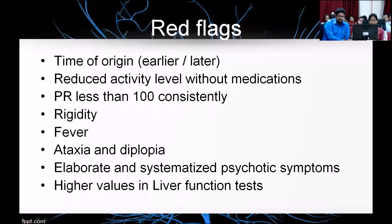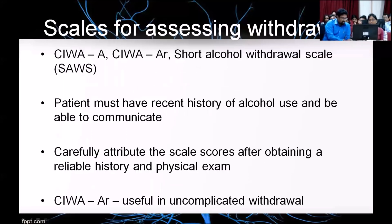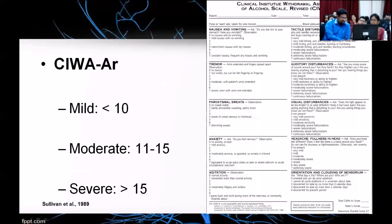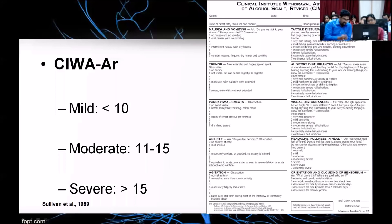Some things to be wary of: if delirium is occurring very quickly after stopping alcohol or very late — say 6 to 7 days after use — look at other causes. Before medicating somebody, hypoactive delirium presenting with a pulse rate less than 100 paired with high blood pressure requires serious ruling out of head injury. Also rule out other cardiovascular illnesses, presence of rigidity, fever, ataxia, diplopia, and elaborate systematized psychotic symptoms — which aren't characteristic of delirium. High bilirubin with low AST/ALT actually points to a more severe form of liver damage.